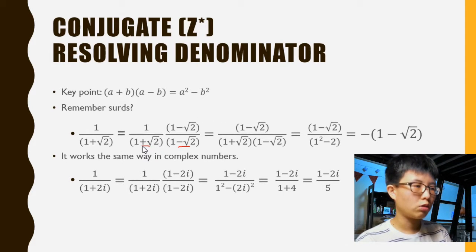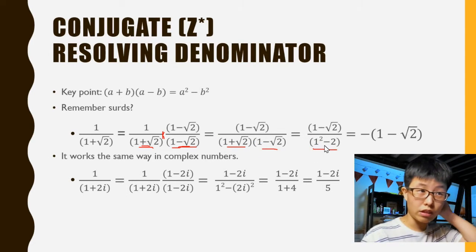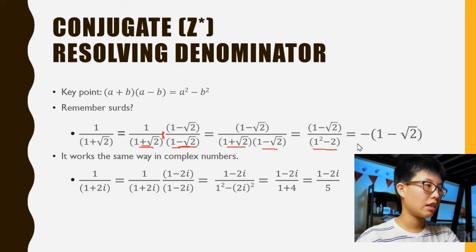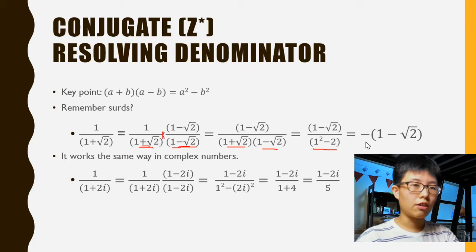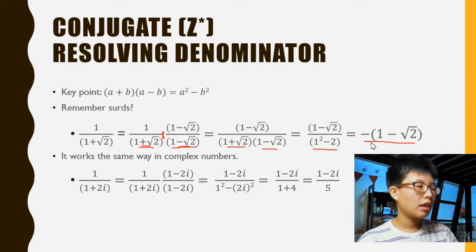When you have + √2, then you multiply it by the same thing, but instead of plus it becomes - √2. Since you're multiplying top and bottom, it's technically the same thing. After you multiply top and bottom, at the bottom you have (a + b)(a - b), so that's how you get a² - b², which resolves, and your denominator is all gone. That's one thing you can do. The same thing you did with surds, you can do with complex numbers.